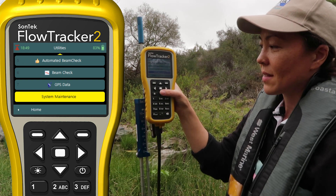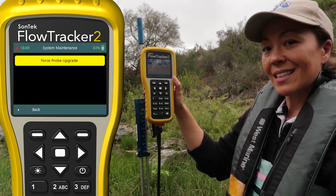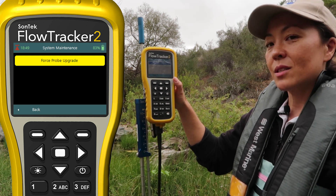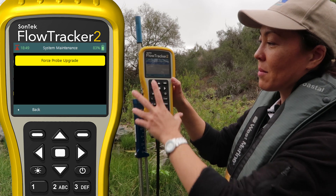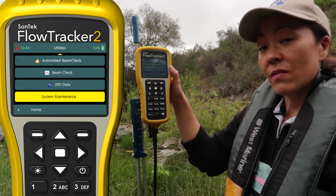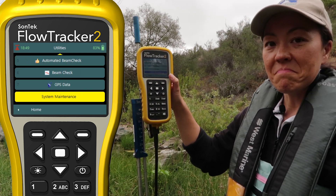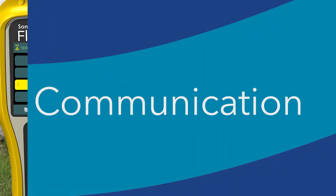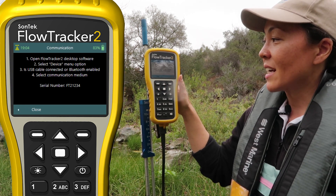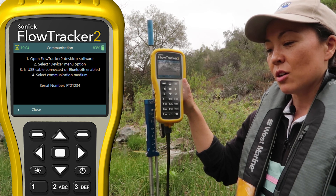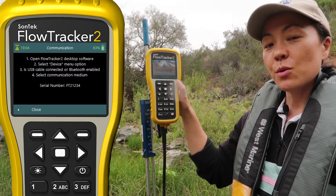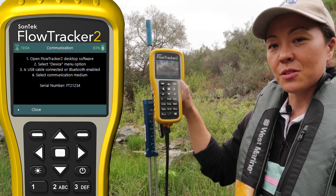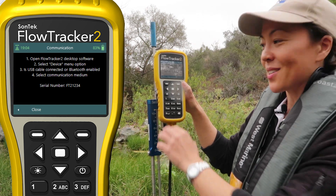Next is system maintenance, which just means firmware — if you need to upgrade your probe to have the latest firmware, you would do that here. We've gone through the utilities menu, so back to the home screen. Third on the home screen is communication. When you select this, it enables you to talk with the FlowTracker to your PC — you would do this to download data files or template files.